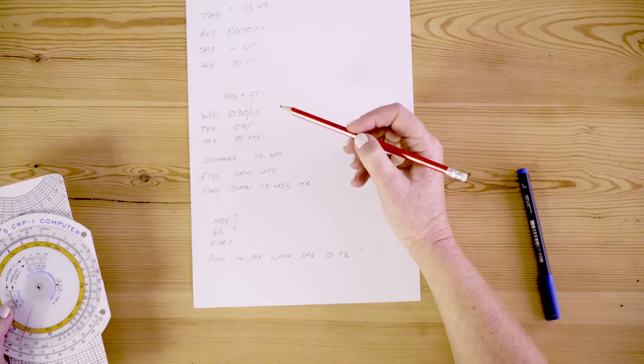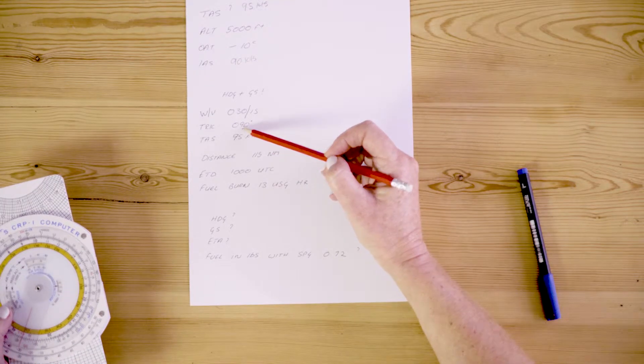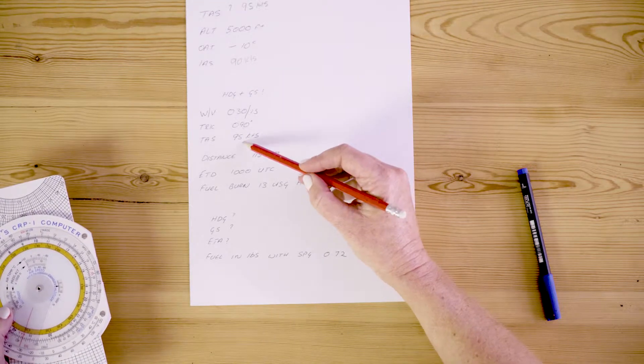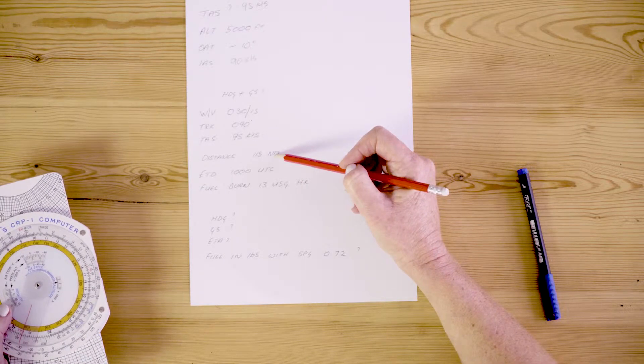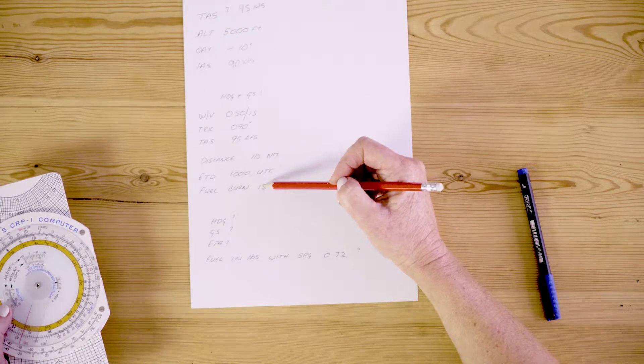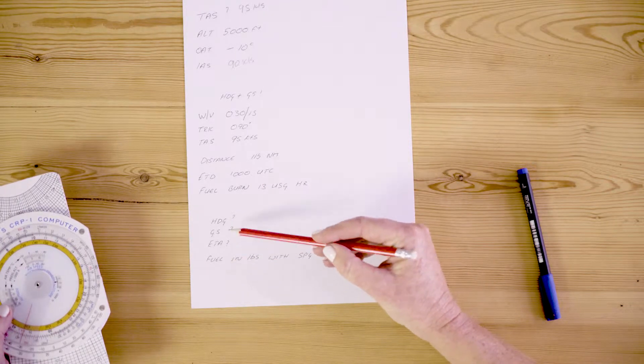I can now work out my ground speed, my heading given that today the wind is 030 degrees at 15 knots. The track which is the line I want to follow on my chart is 090 degrees and I've now worked out my true airspeed is 95 knots. The distance being 115 nautical miles, my time of departure is 10 o'clock UTC and my fuel burns 13 gallons an hour. I can't answer any of this question until I know my ground speed.